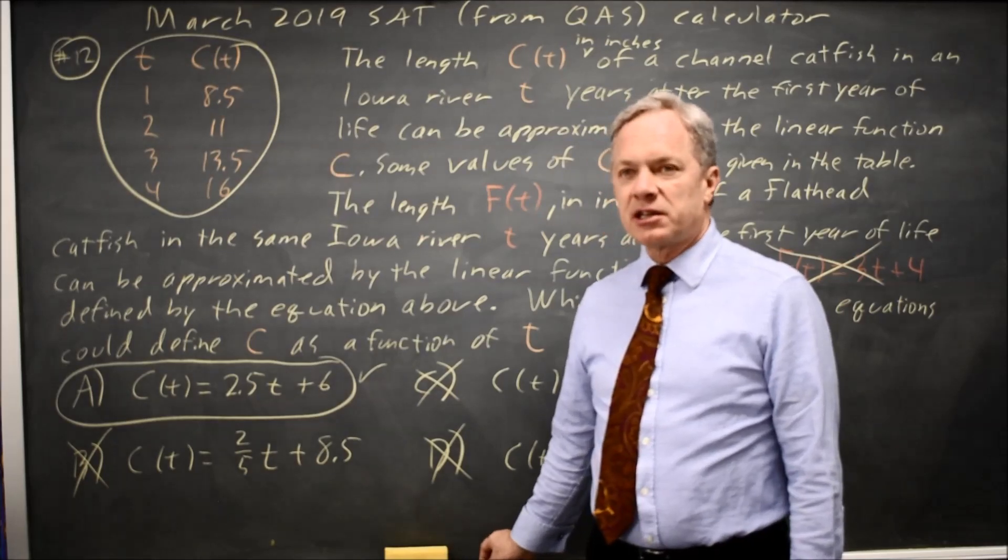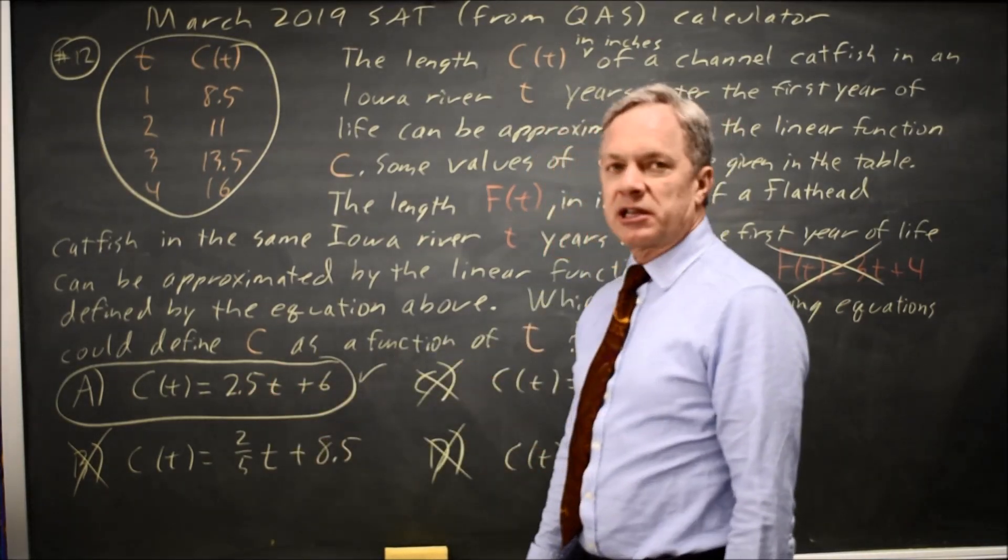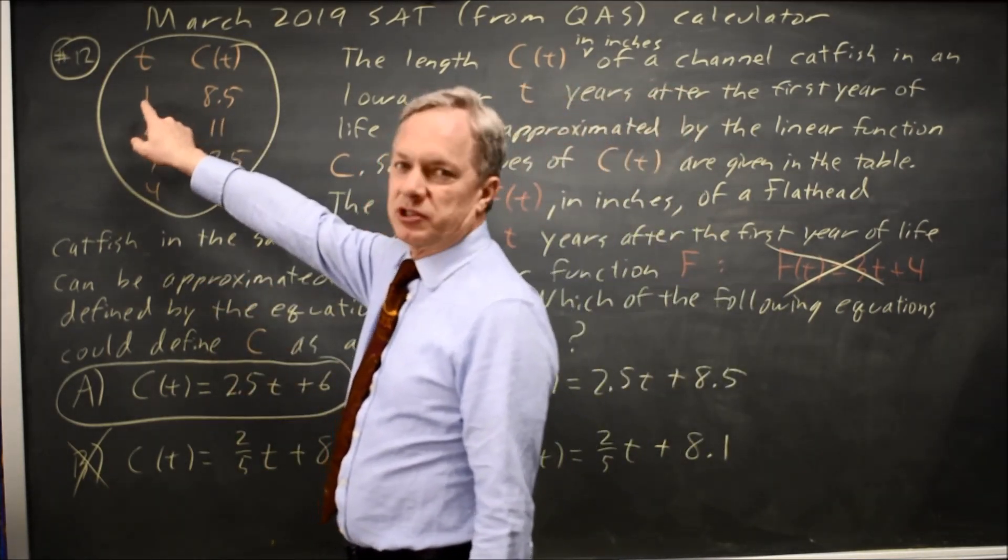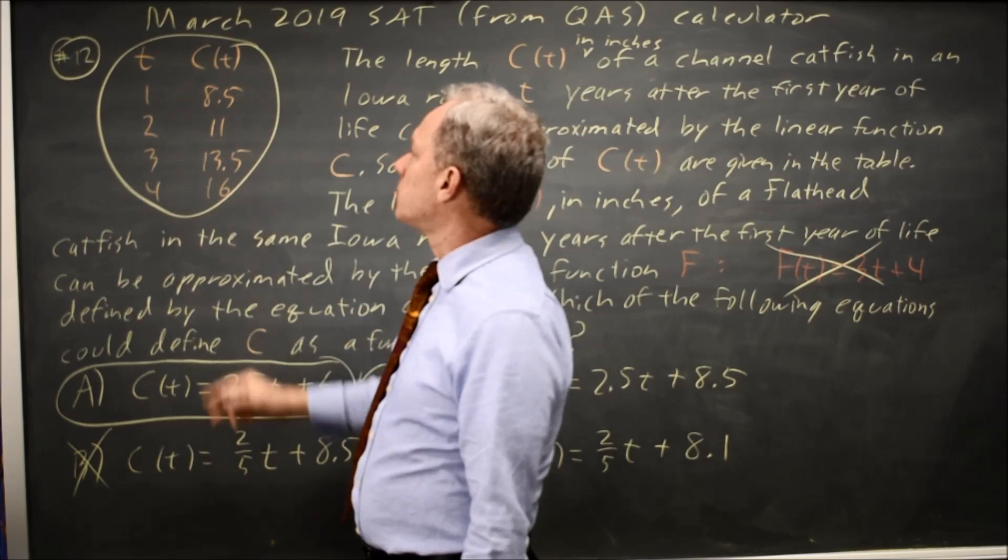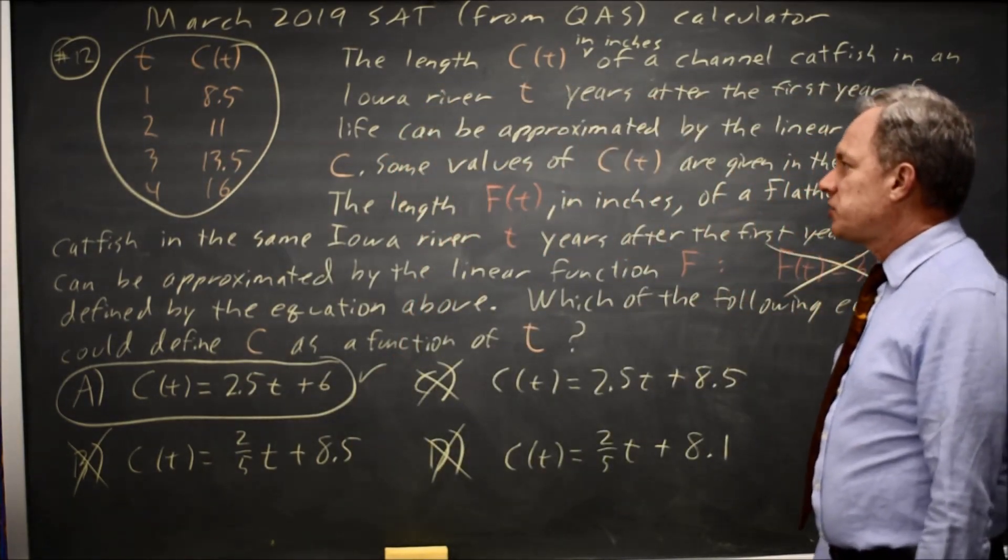An alternative is to use your calculator and enter A, B, C, D into your calculator and check the table, making sure you're starting with x equals 1 for T equals 1 to see which one matches the table they've given you.